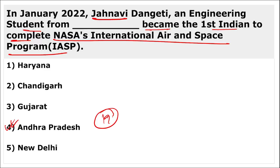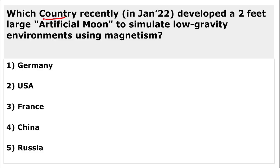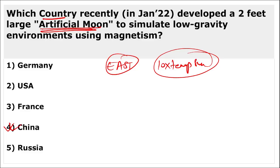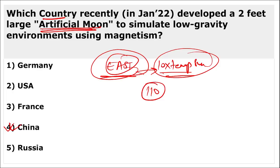China developed a two-feet large artificial moon. China also achieved the East project — setting a new world record by achieving a plasma temperature of 70 million degrees Celsius, held for approximately 1,056 seconds, which is 10 times the temperature of the surface of the Sun.